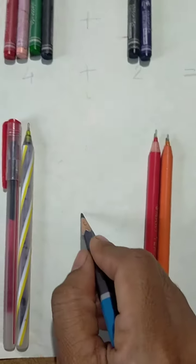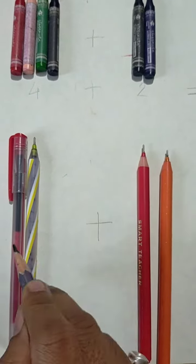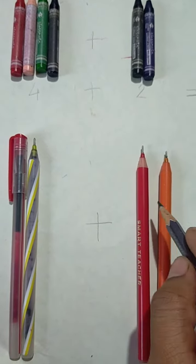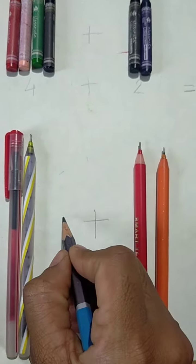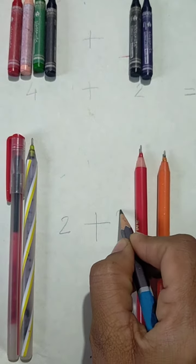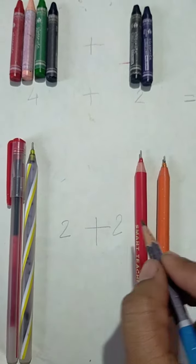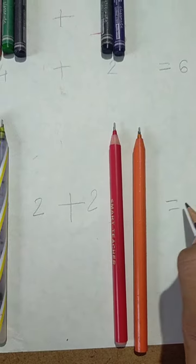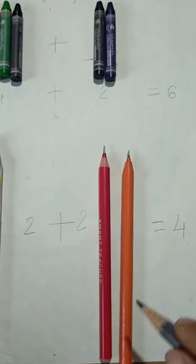Then after pen. Both are 2, 2. So, 2 plus 2. 1, 2, 3, 4. 1, 2, 3, 4. So, how many are they? 4.